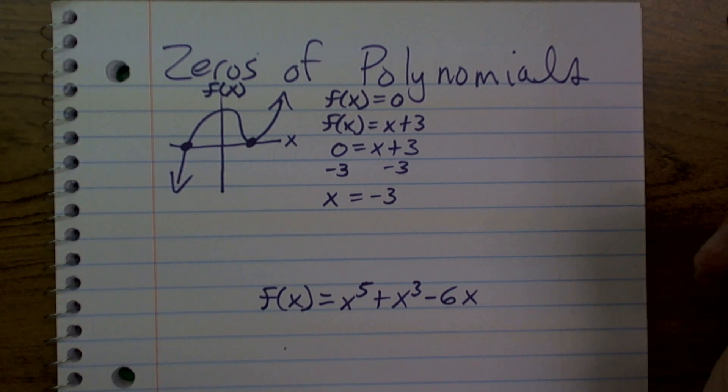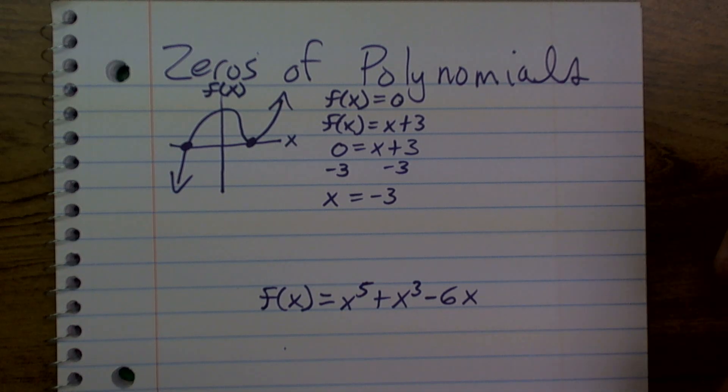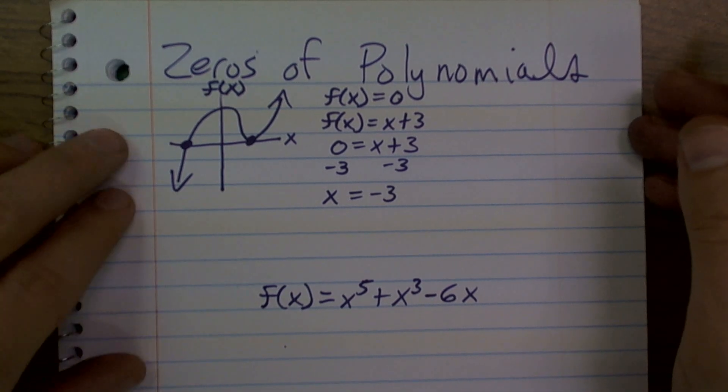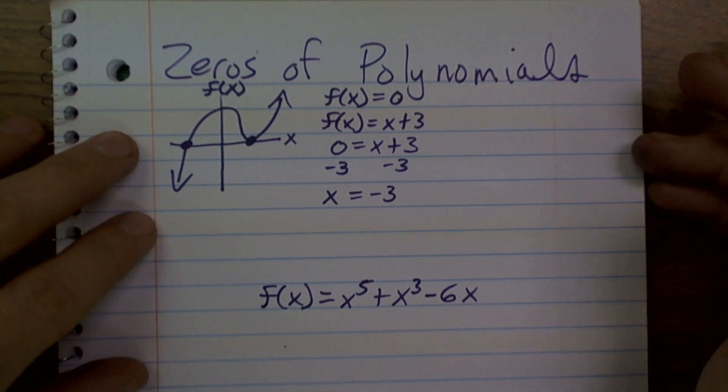A couple of those ways is what we're going to talk about is factoring out the polynomial, or factoring a polynomial. Now, before we get into our factoring techniques, there is one thing I want to make sure that we also remember is the multiplicity.